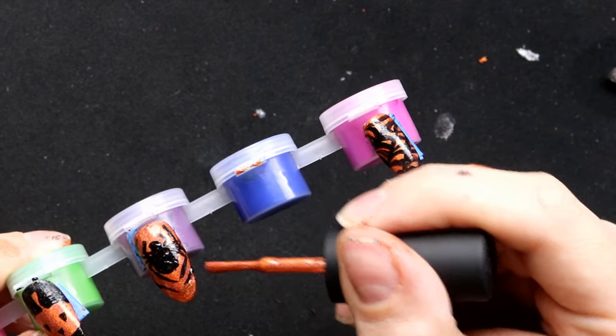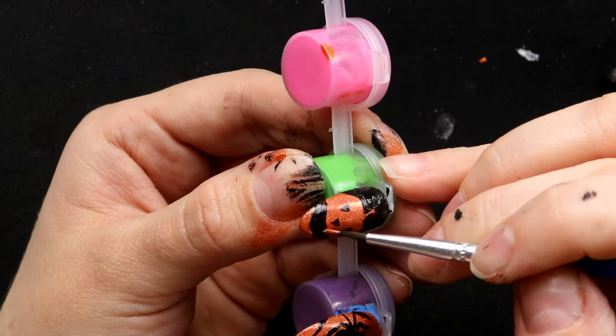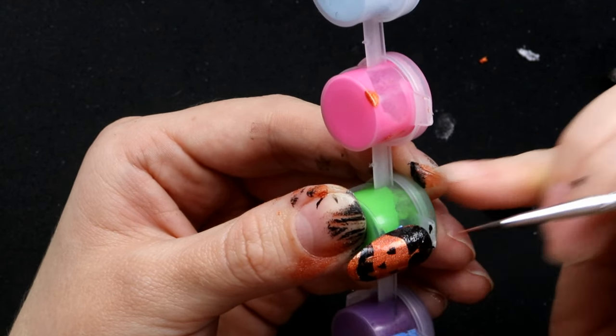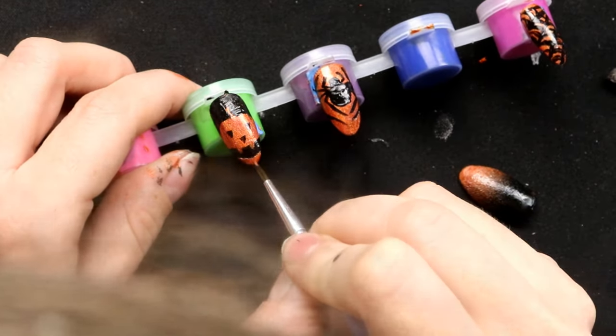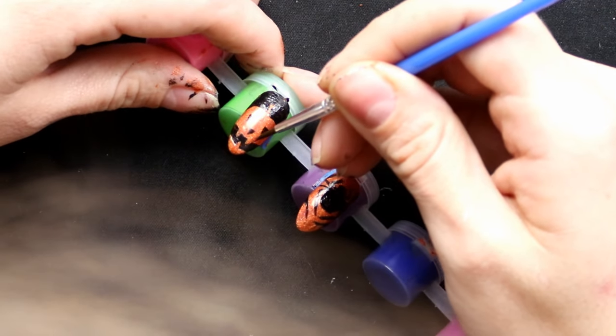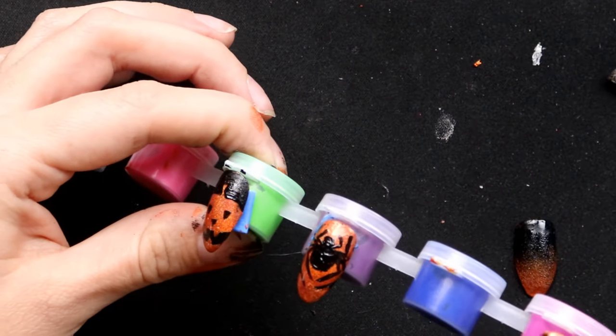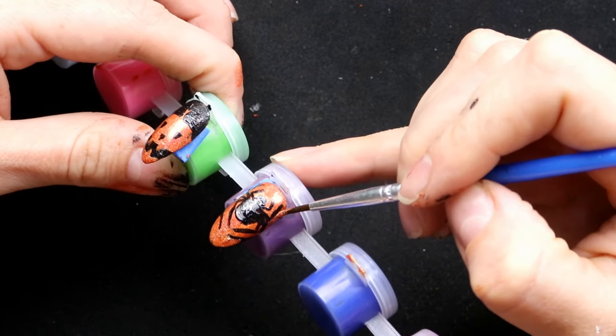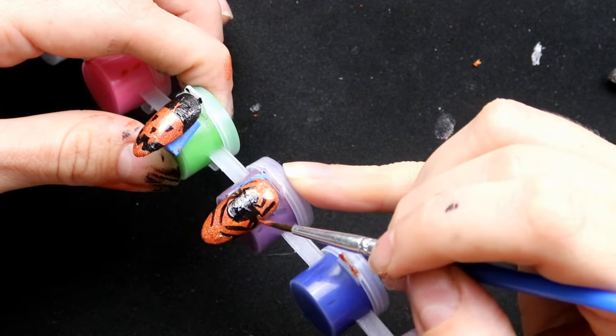Just cleaning that up with the orange. Sometimes it's just easier to go in with more nail polish to get in with those finer details. I just think it looks so cute, these little things. Just cleaning up the spider as well, really defining some of those legs and the tips of those.